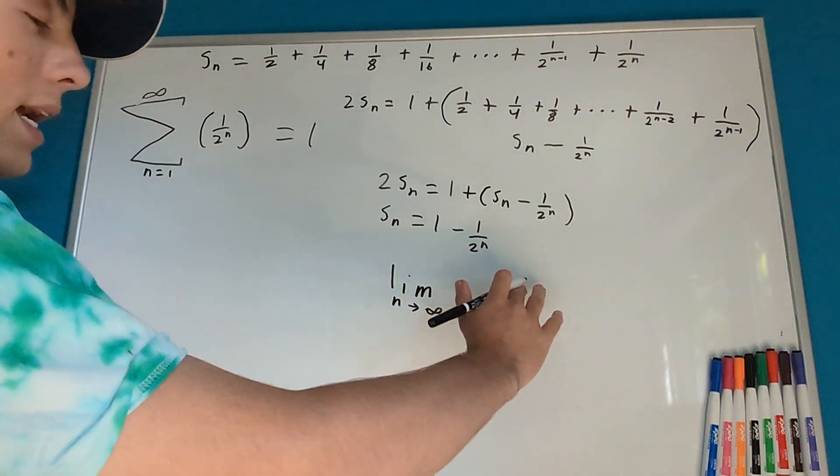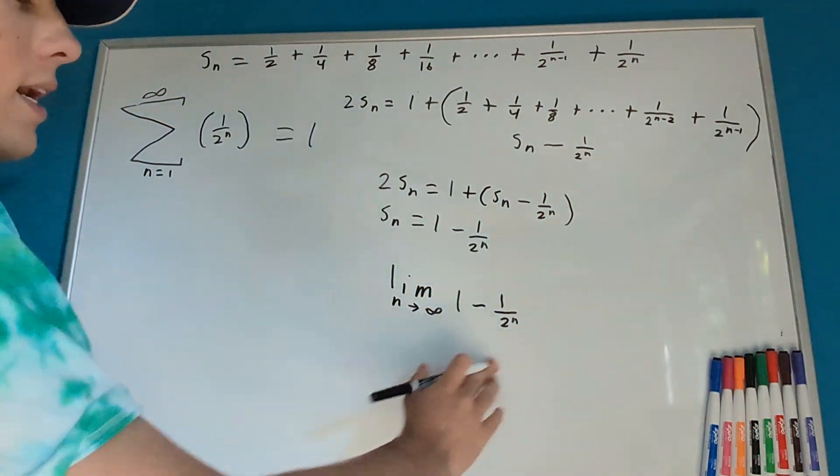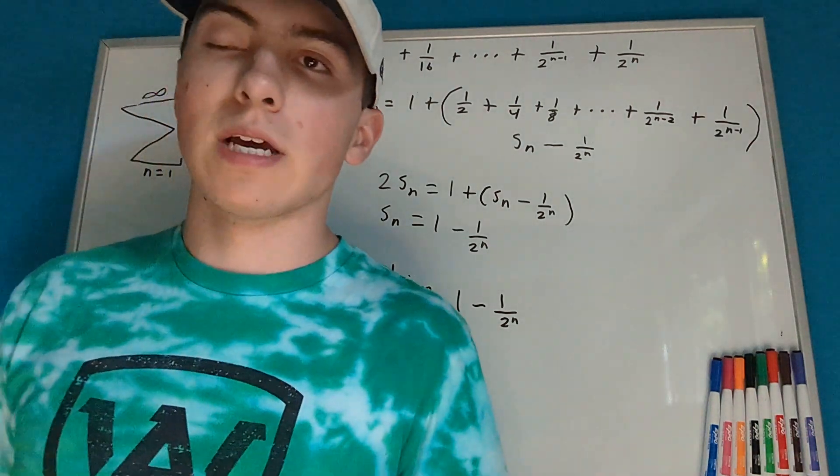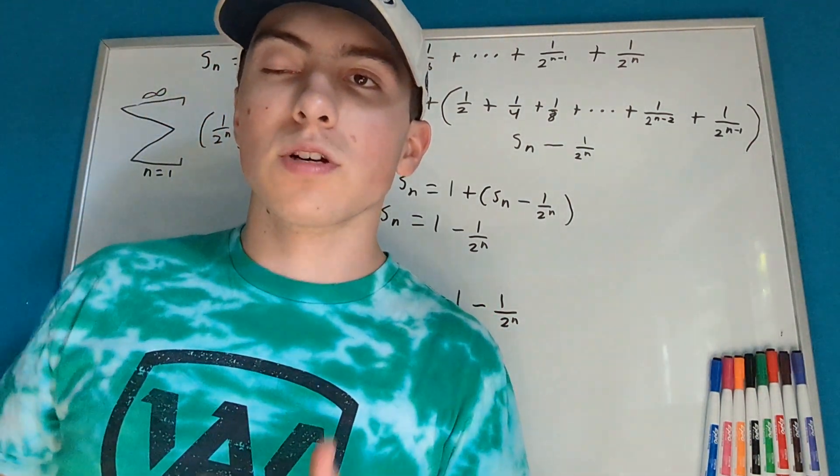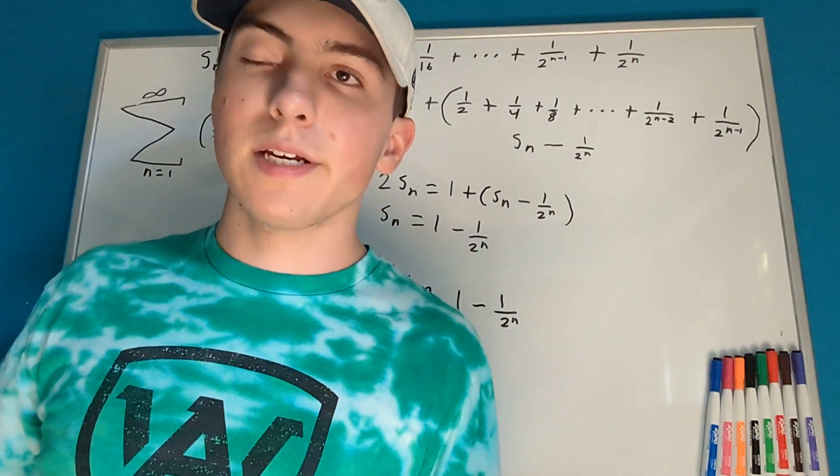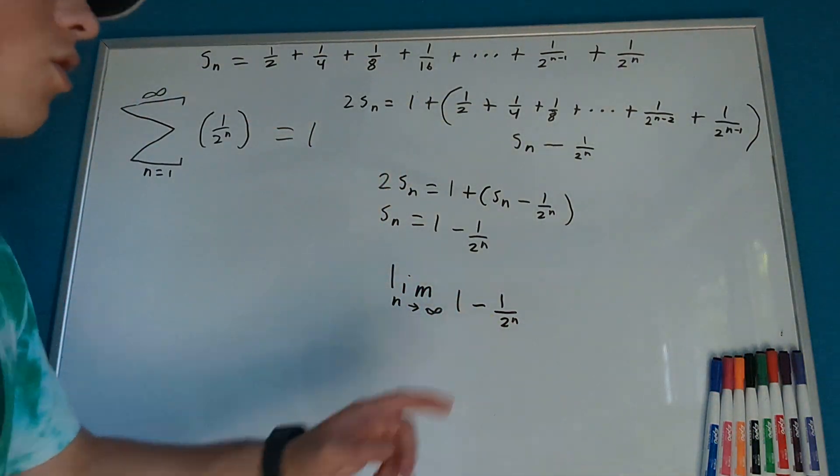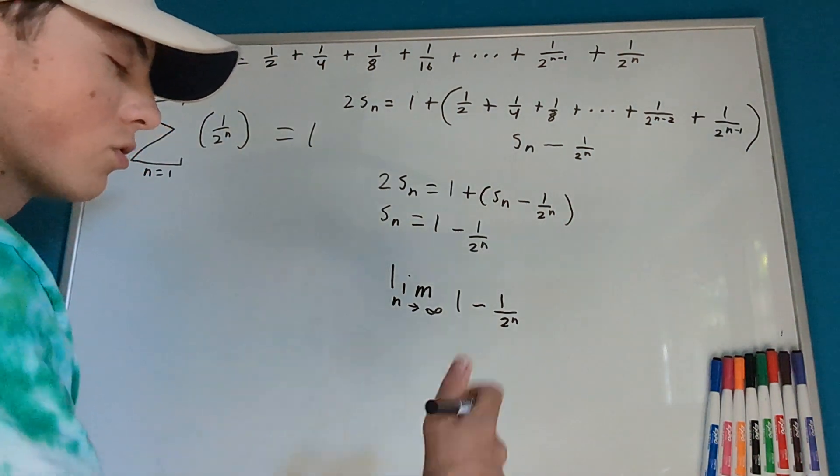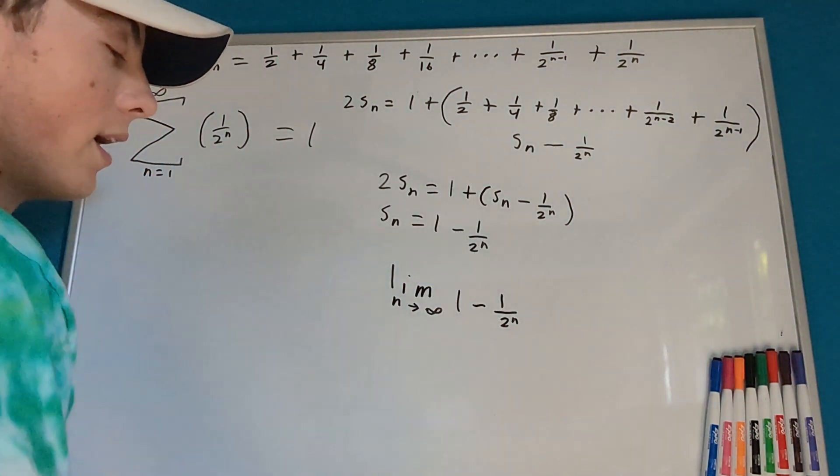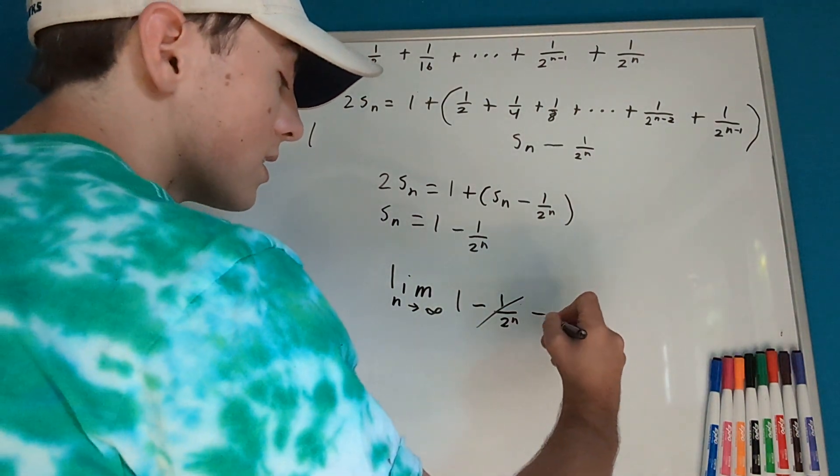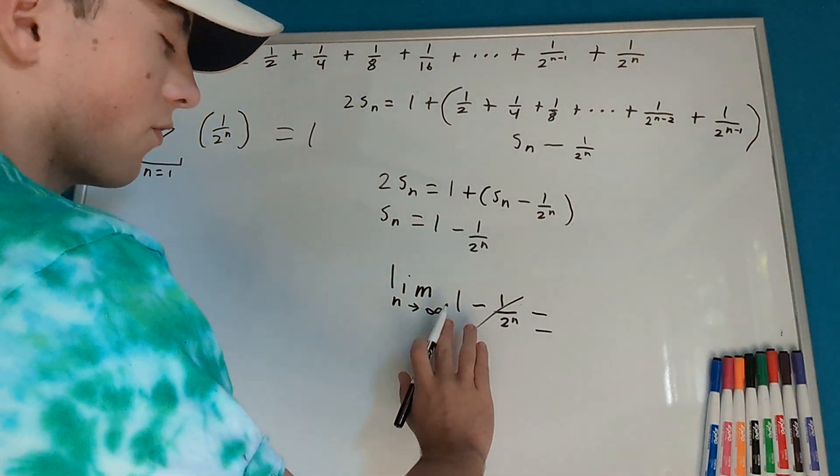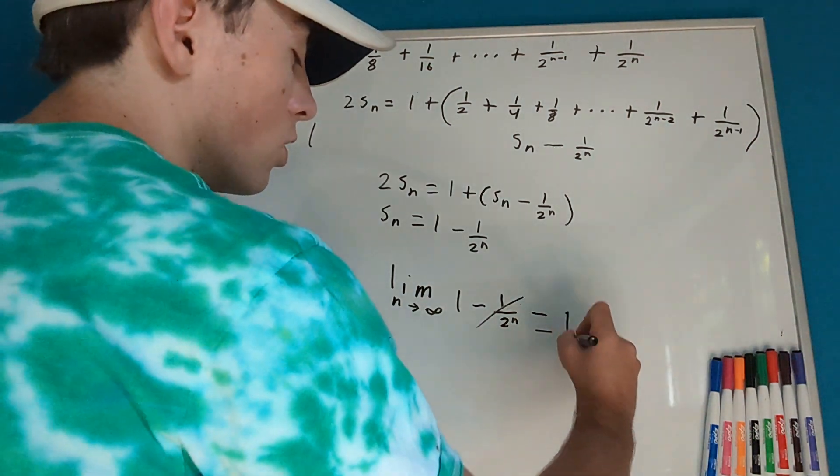Now, I suggest that you pull out a calculator, at least think about what will happen as n gets closer and closer to infinity. Well, as n gets closer and closer to infinity, this 1 up here will be divided by a larger and larger amount. As something gets divided by a larger and larger amount, it's going to get closer and closer and closer to 0. So, that means that this will get closer and closer and closer to 0. So, we can kind of just forget about that bit. So, we can say that the limit as n approaches infinity of this is equal to 1.